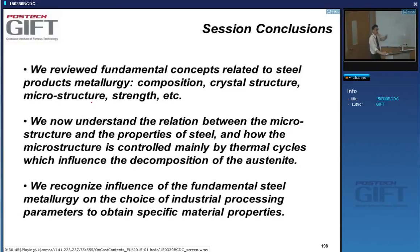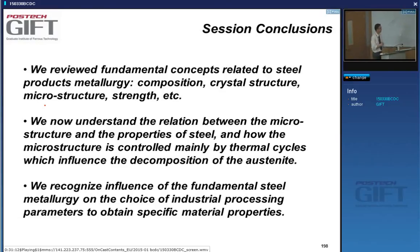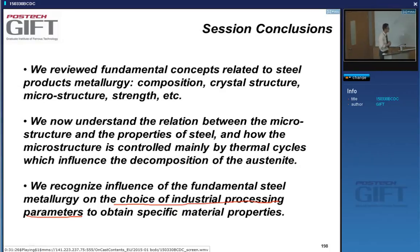At this stage we've completed some general discussion about the physical metallurgy needed for this course — compositions, crystal structure, transformations, and the relationship between microstructure and strength. We'll be able to use this whenever we discuss the technical processing of steels and the decomposition of austenite, which will help us understand why particular industrial processing parameters are used.